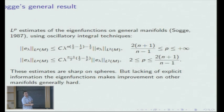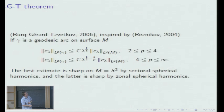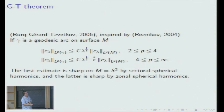The general result in this research direction was relatively recent, due to Burq, Gérard, and Tzvetkov in 2006, inspired by earlier work by Reznikov in 2004. They proved that if γ is a unit-length geodesic arc on a surface, there are similarly two pieces of LP estimates: one for p small and one for p large. Similarly, this is sharp on sectorial harmonics and the other is sharp on zonal spherical harmonics.